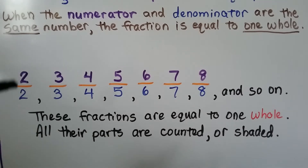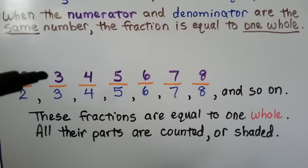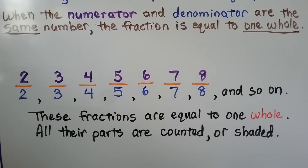If we have two parts and both of them are shaded, the whole thing is shaded. If you had a candy bar split into three equal parts and you ate all three of them, you ate the whole candy bar — you ate all three parts. So, any time the numerator and denominator are the same number, the fraction is equal to one.